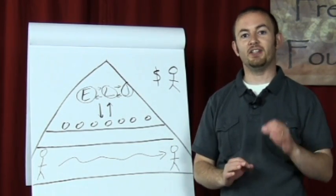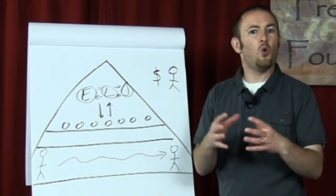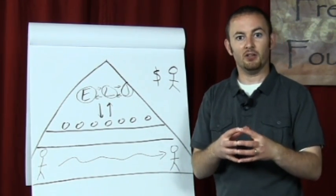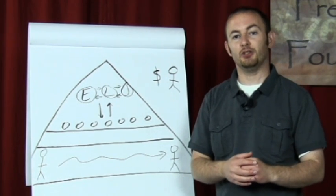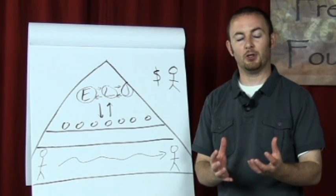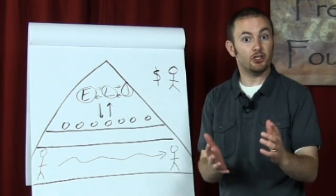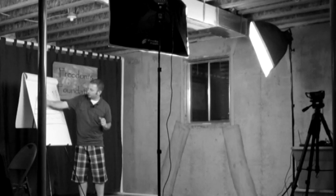And if you look at Article I, Section 8 of the Constitution, that's where all the core powers of the federal government are laid out. If you look at that section of the Constitution, every one of those powers has that same general type of purpose. Not one of them is local in nature. Again, the role of the federal government is to deal with issues that affect the entire country as a whole.